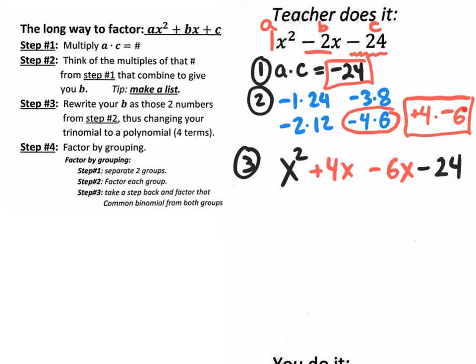So that becomes a 4x minus 6x. There it is in red. 4x minus 6x. So the question becomes, why the heck would I want to change the three terms to four terms? We just made it bigger, we made it longer, we made it uglier. Why would I want to do that?